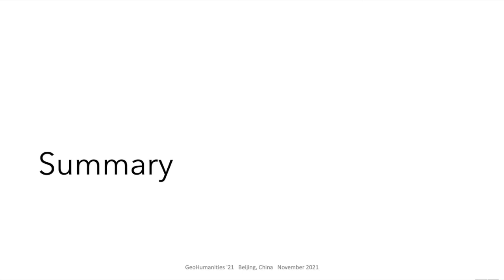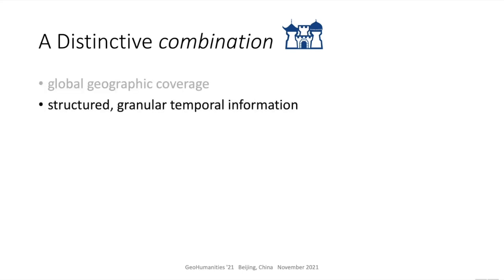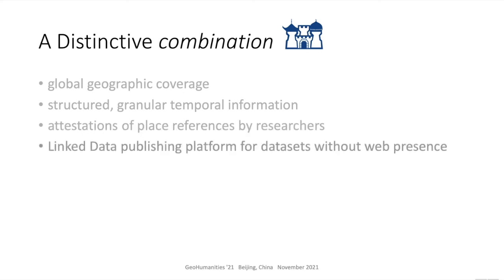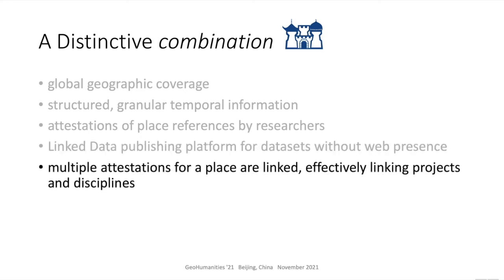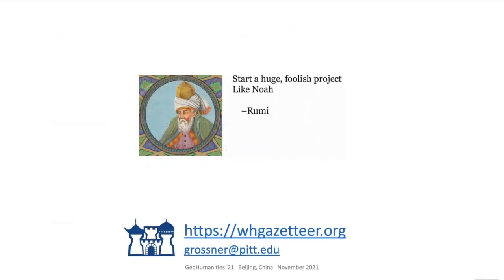To summarize, World Historical Gazetteer is an ambitious project that is distinct from existing place name resources by having these seven qualities in combination: global geographic coverage; structured and granular temporal information; cited attestations of place references by researchers; a linked data publishing platform for datasets without web presence; a union index linking multiple attestations for places, effectively linking projects and disciplines; faceted record-level search across datasets; and machine access via APIs. Thank you for your attention. I am happy to answer questions and to respond to any email inquiries.